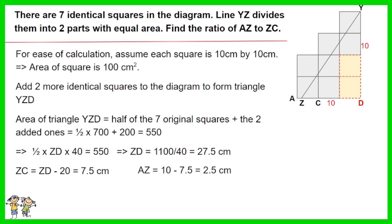And AZ equals 10 minus 7.5 equals 2.5 cm. Thus the ratio of AZ to ZC equals 2.5 to 7.5. The answer is 1 to 3.